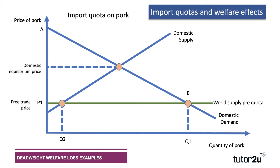Let's look at an import quota using the example of pork. Say a government introduces a limit on the volume — the tonnage — of pork products allowed into a country. The domestic equilibrium price is shown as the intersection between domestic supply and demand. With free trade, if other countries can supply pork more cheaply at price P1, then domestic producers will supply Q2, while domestic demand will be Q1, so a high percentage of the market is met by imports.